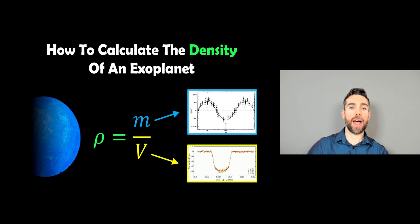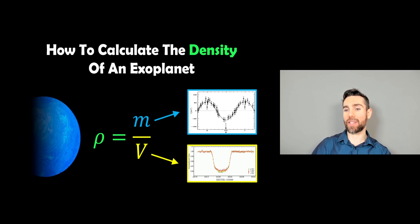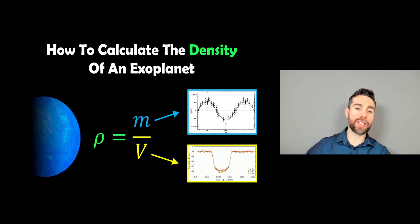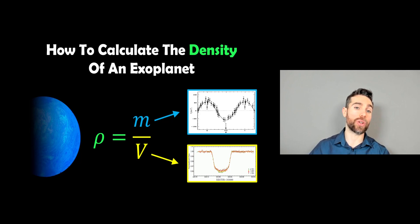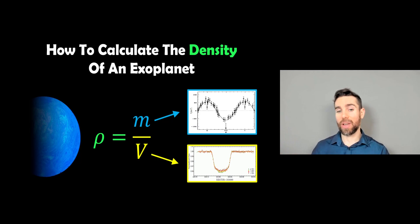Welcome to this video. In this video I wanted to discuss how we actually calculate the density of exoplanets. It requires a few different observations in order to get the actual density. The first thing we need to do is find the mass and the volume, and then we can calculate the density.